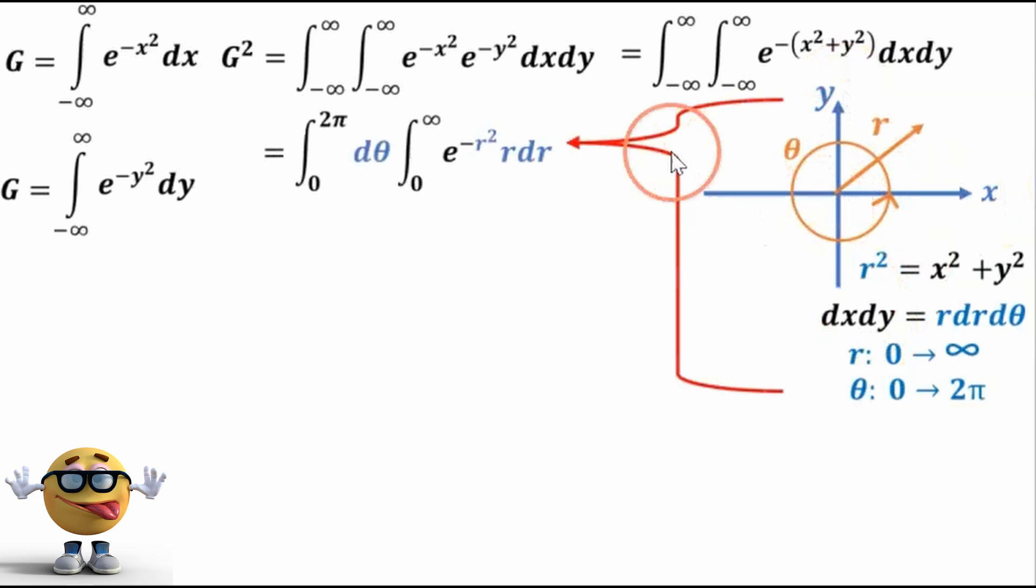Okay, so we're going to substitute this in to this equation right here, and we now have theta going from 0 to 2 pi, and instead of x's and y's, we now have r's. And from here, to integrate this...